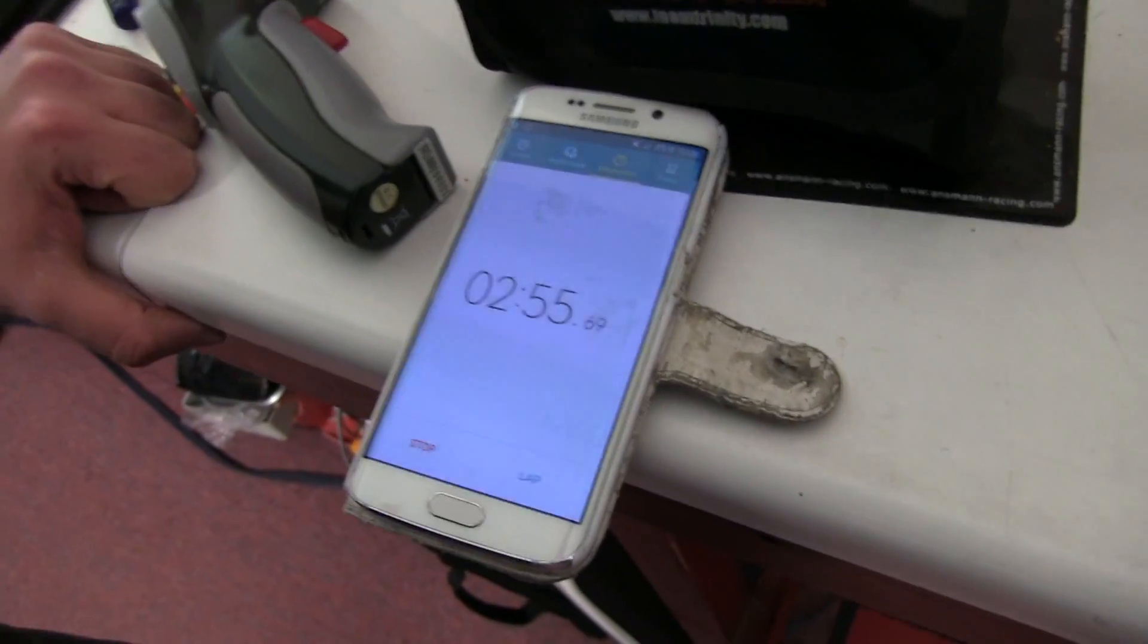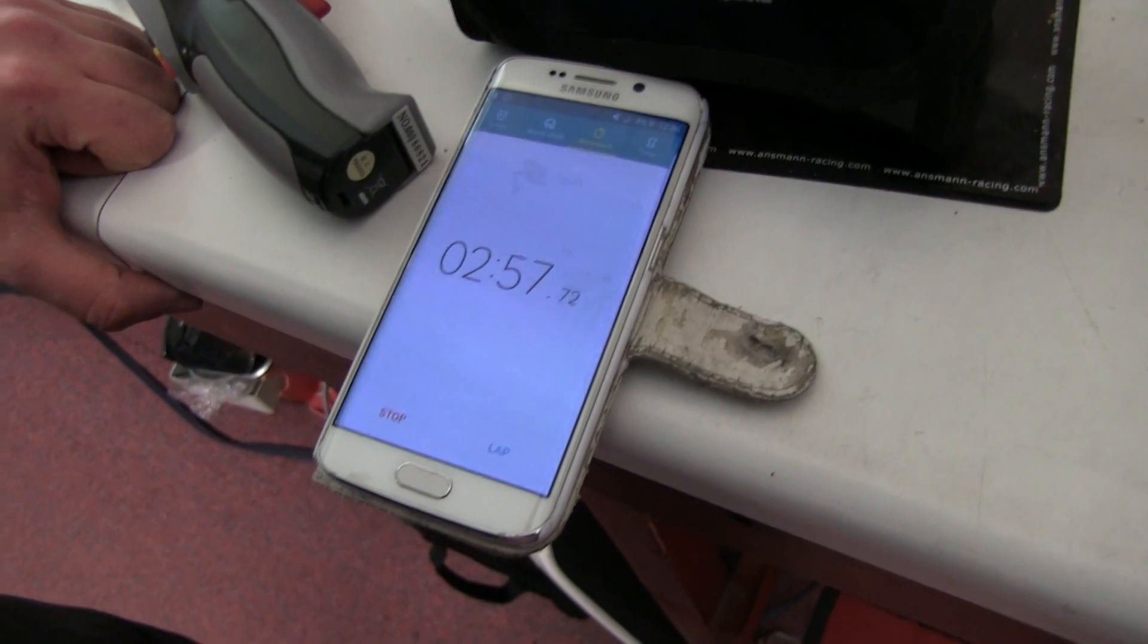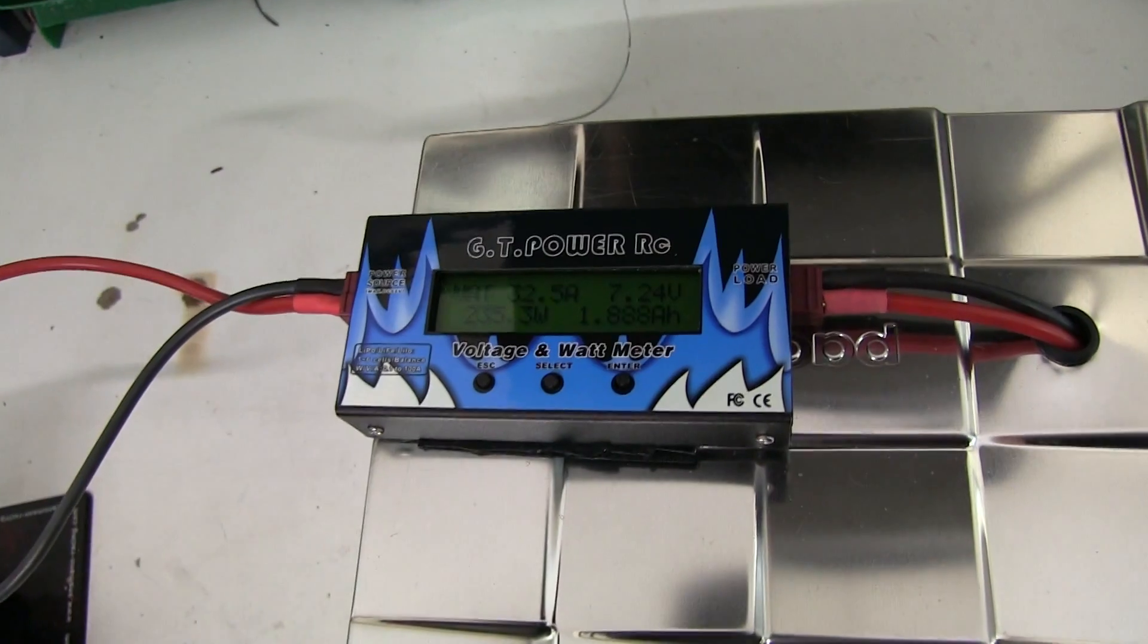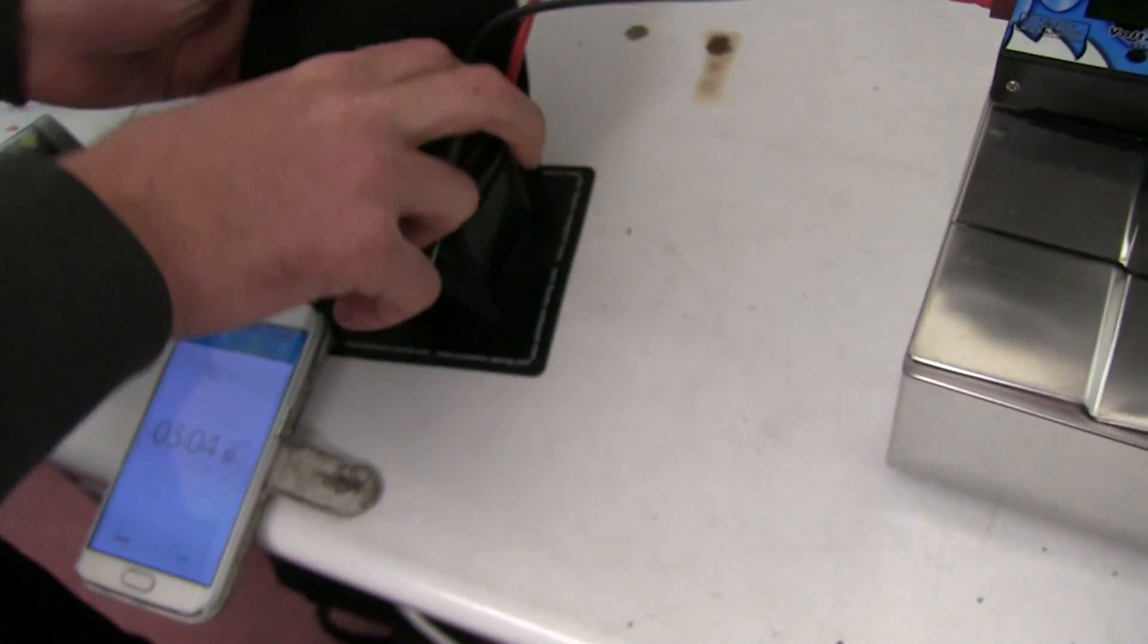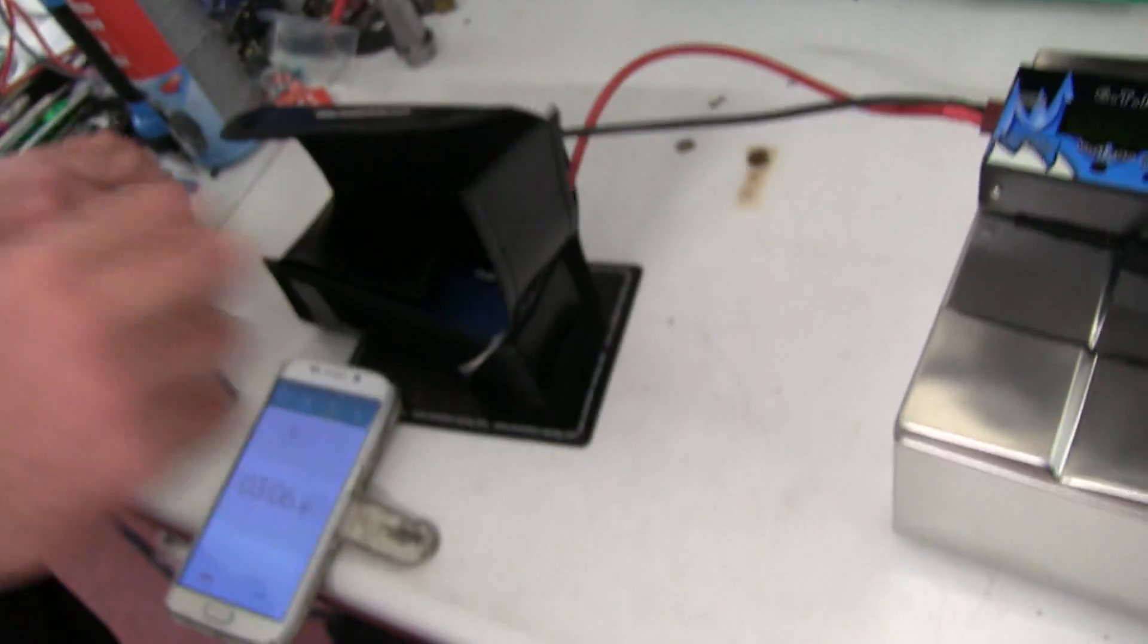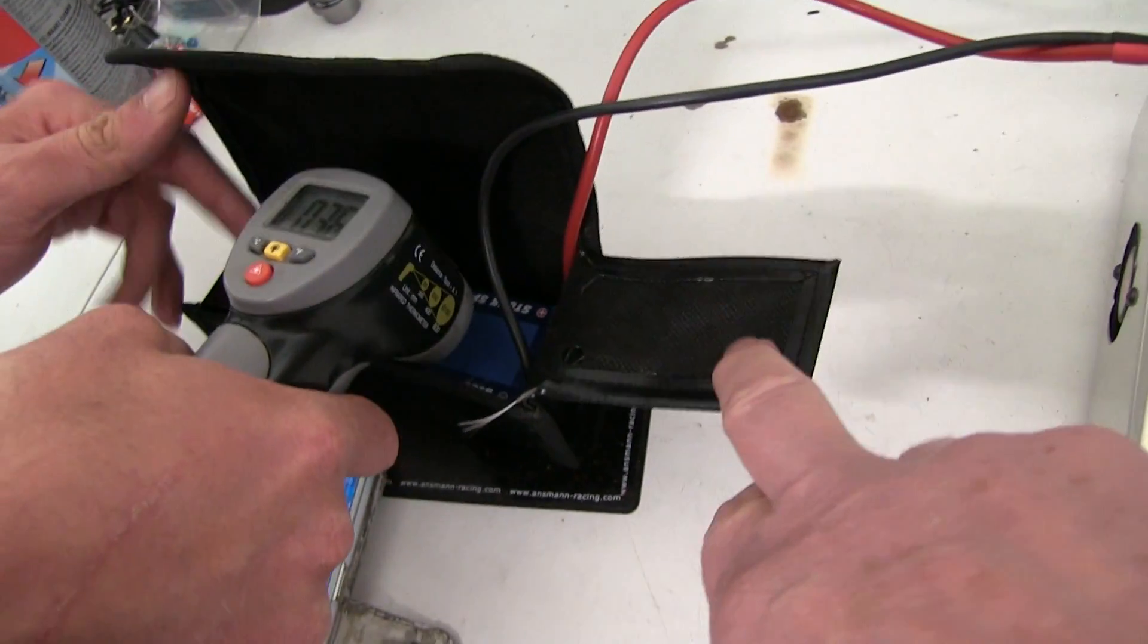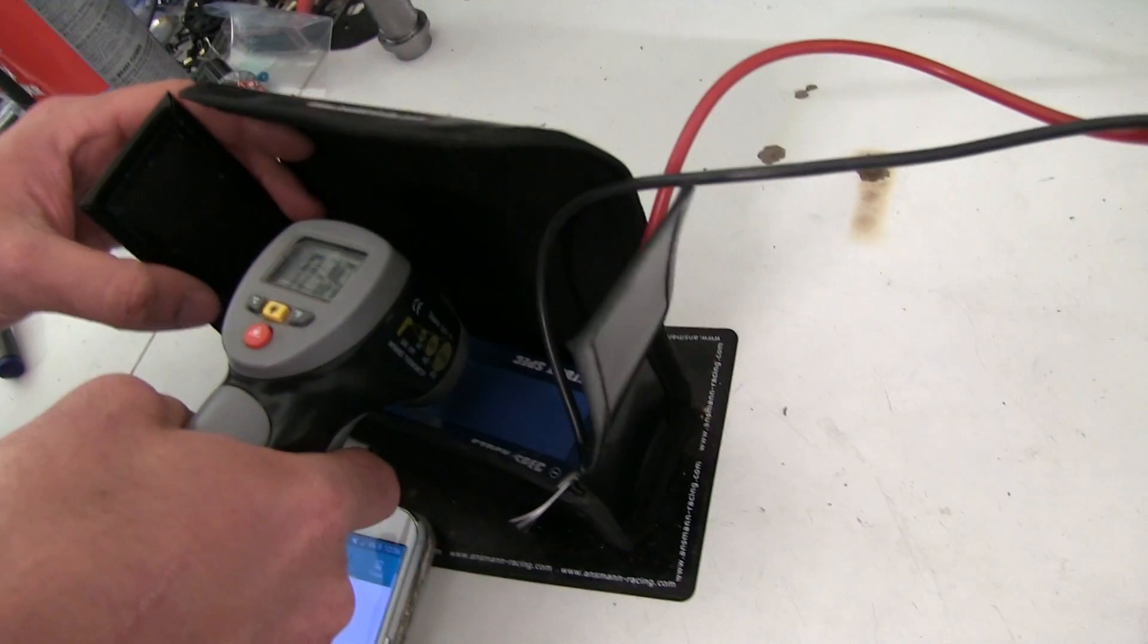We put a timer on it. It's 3 minutes and it's coming up to 2 amp hours. This battery is quite old, by the way, so it's not very high. It hasn't got a lot of performance in it. It's been used a lot and abused a lot.